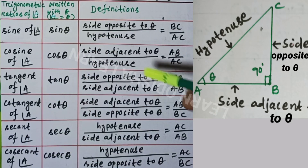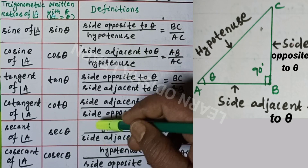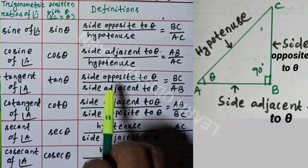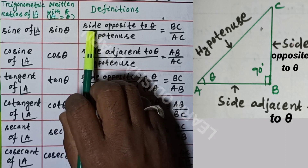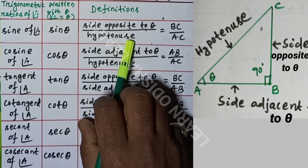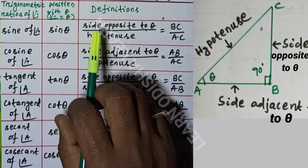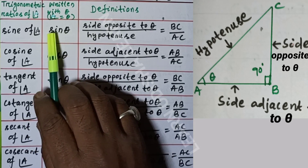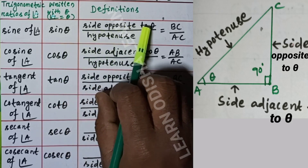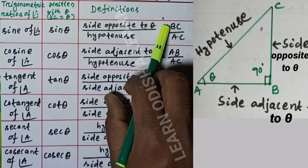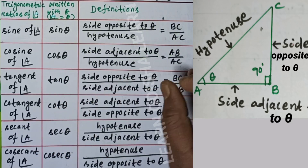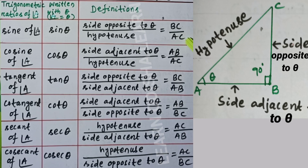These are the trigonometric ratios of angle A, written with theta. First, sine of angle A — written as sin theta — is defined as side opposite to theta divided by hypotenuse. When sin theta is given, we take BC divided by AC, where BC is the side opposite to theta and AC is the hypotenuse.